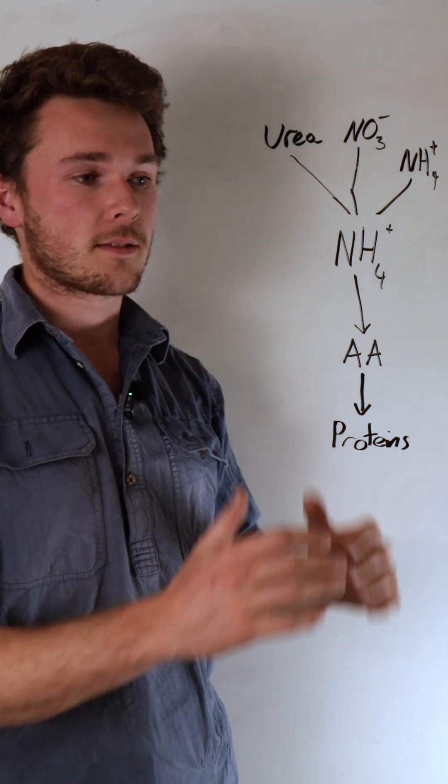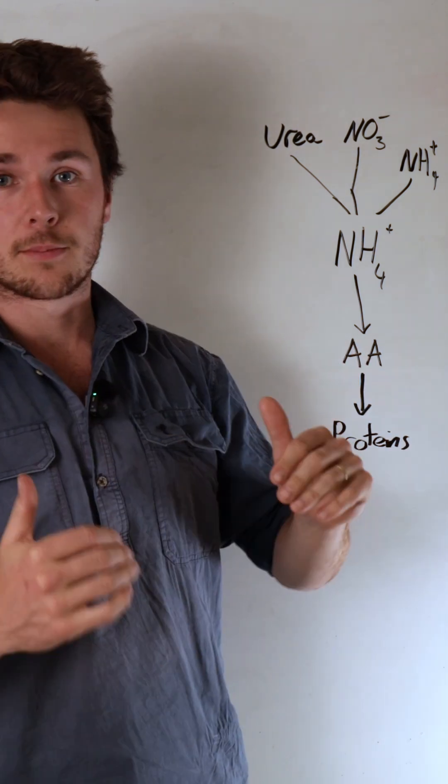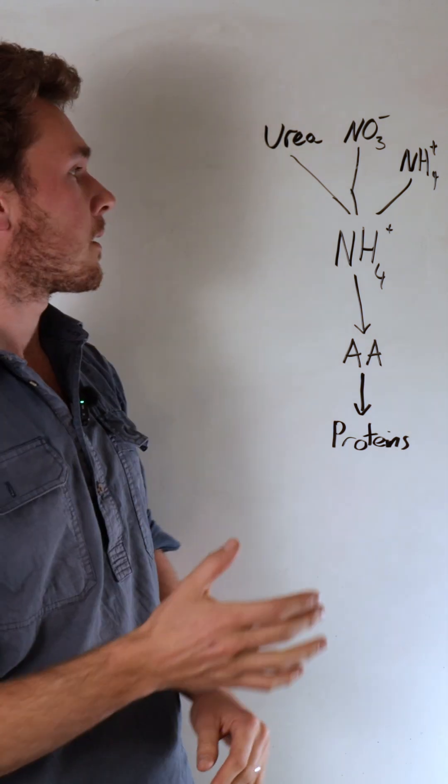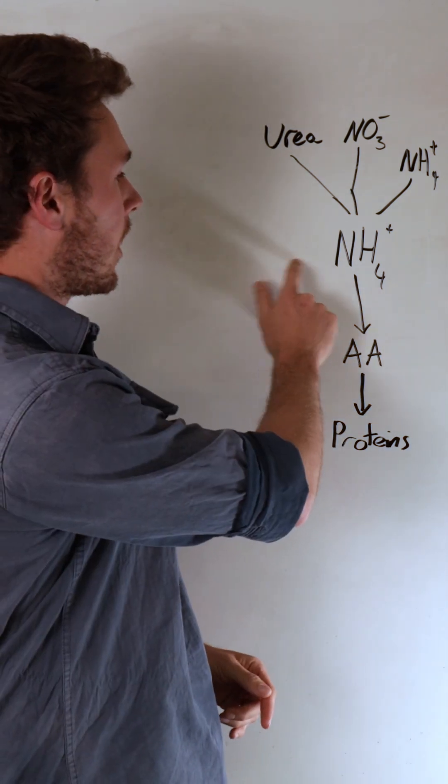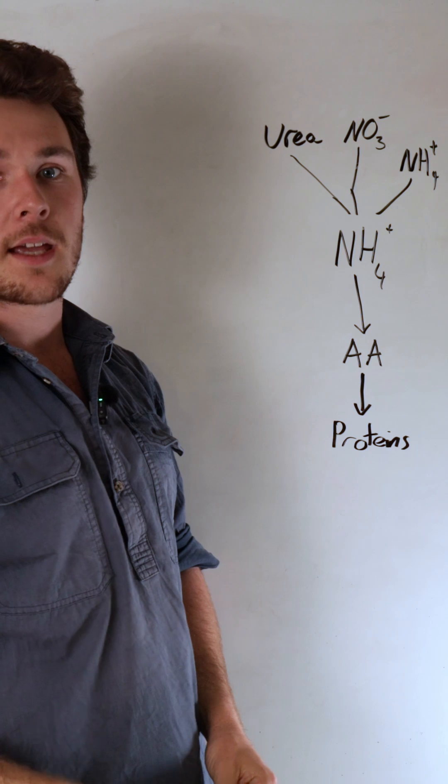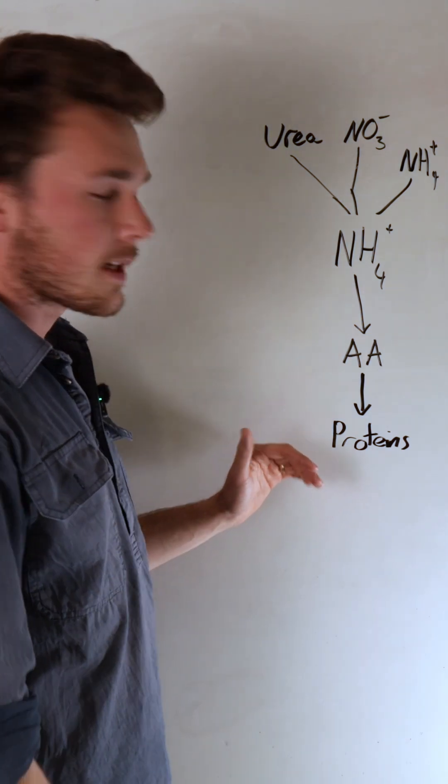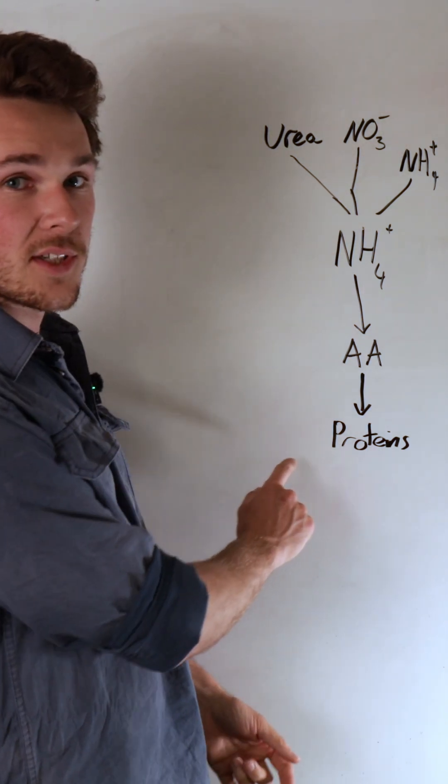A really interesting thing in plants is the way nitrogen actually gets converted into proteins. This is something we're seeing a lot with clients - nitrogen gets caught up in the ammonium stage and doesn't progress down to proteins. You want all your nitrogen as proteins.